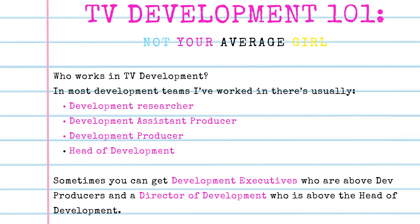...there's usually a development researcher, a development assistant producer, a development producer, and a head of development. And sometimes you can get development executives, who are above development producers, and a director of development, who is above the head of development. I'm not going to go into a breakdown of each role in this particular video.